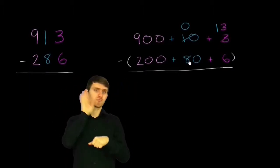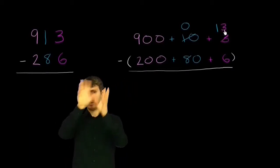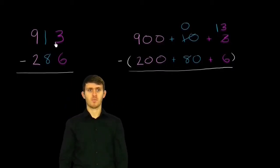Notice, I haven't changed the value. 900 plus 0 plus 13 is still 913.